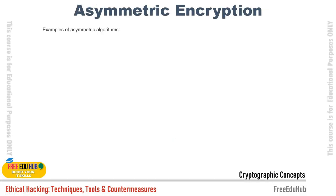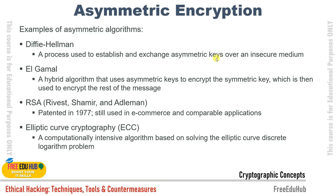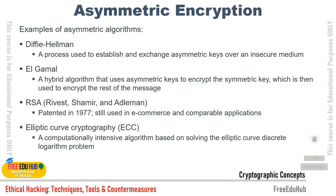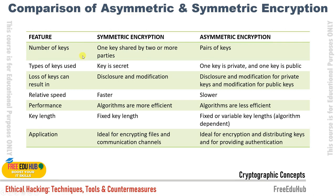Examples of asymmetric encryption algorithms include Diffie-Hellman, a process used to establish and exchange asymmetric keys over an insecure medium; ElGamal, a hybrid algorithm that uses an asymmetric key to encrypt a symmetric key; RSA, patented in 1977 and still used in e-commerce for online transactions; and Elliptic Curve Cryptography (ECC), a computationally intensive algorithm based on solving the elliptic curve discrete logarithm. The algorithm choice depends on the type and importance of the data.